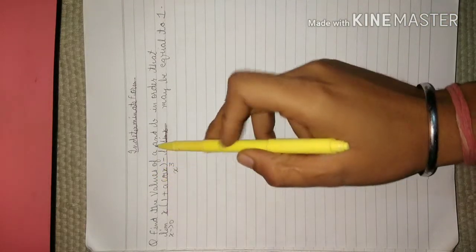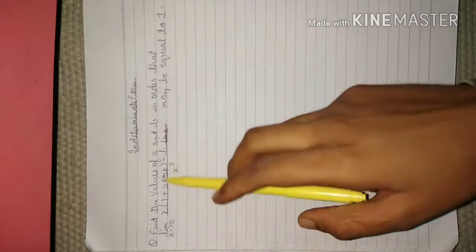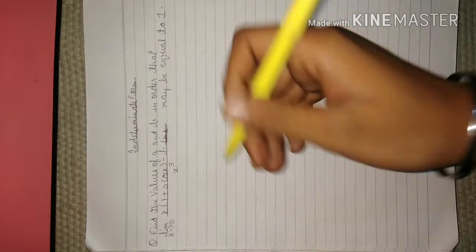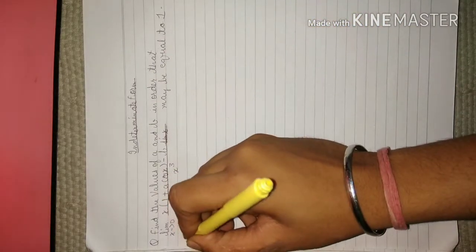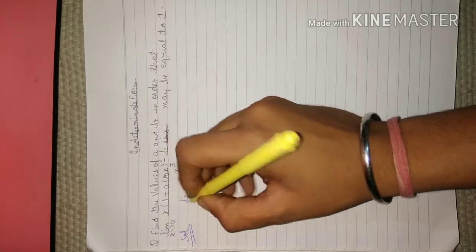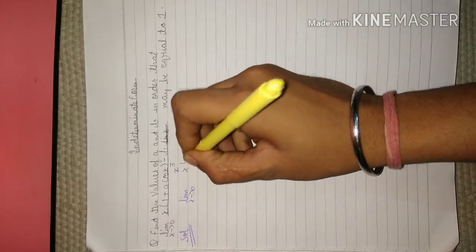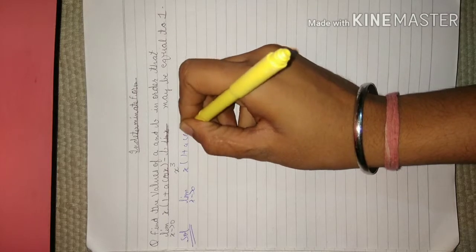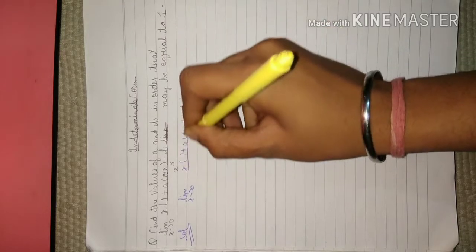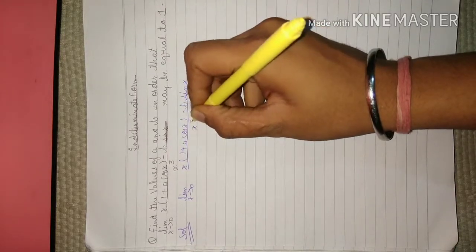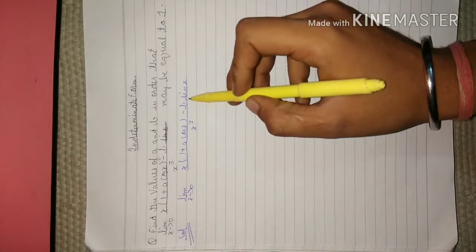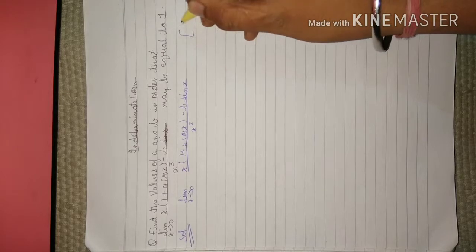In this question we have to find the value of a and b so that this limit may be equal to 1. We take the limit as x tends to 0 of (1 + a·cos x - b·sin x) upon x cubed. Now if we put x equals to 0, the numerator becomes 0 and the denominator becomes 0. Therefore it is a 0 by 0 form.